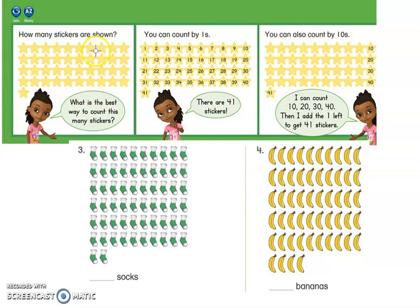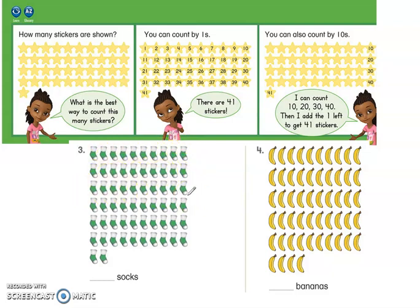As you can see here, there are options on how you can count. We could count by ones, or we can count by tens. Those are the two options that we have for this lesson. We have to make sure that we either have a line of ten socks in each row, or we just count by one.